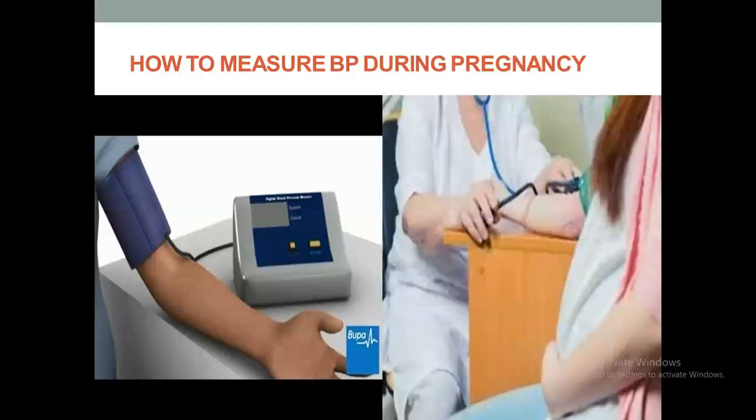Alternatively, we can measure in the supine position, but we must tilt the patient to the left to overcome the risk of supine hypotension syndrome — the effect of the gravid uterus on the inferior vena cava, which decreases venous return to the maternal circulation. So we have two positions: sitting, or supine with left lateral tilt.